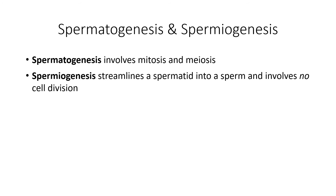Now that we've had some background information, we can head to your course pack on page 129 and talk a little more about spermatogenesis and spermiogenesis. Sperm production begins at puberty with the onset of an increase in hormone levels. The time to make sperm through both spermatogenesis and spermiogenesis takes about 10 weeks — around 64 to 72 days.